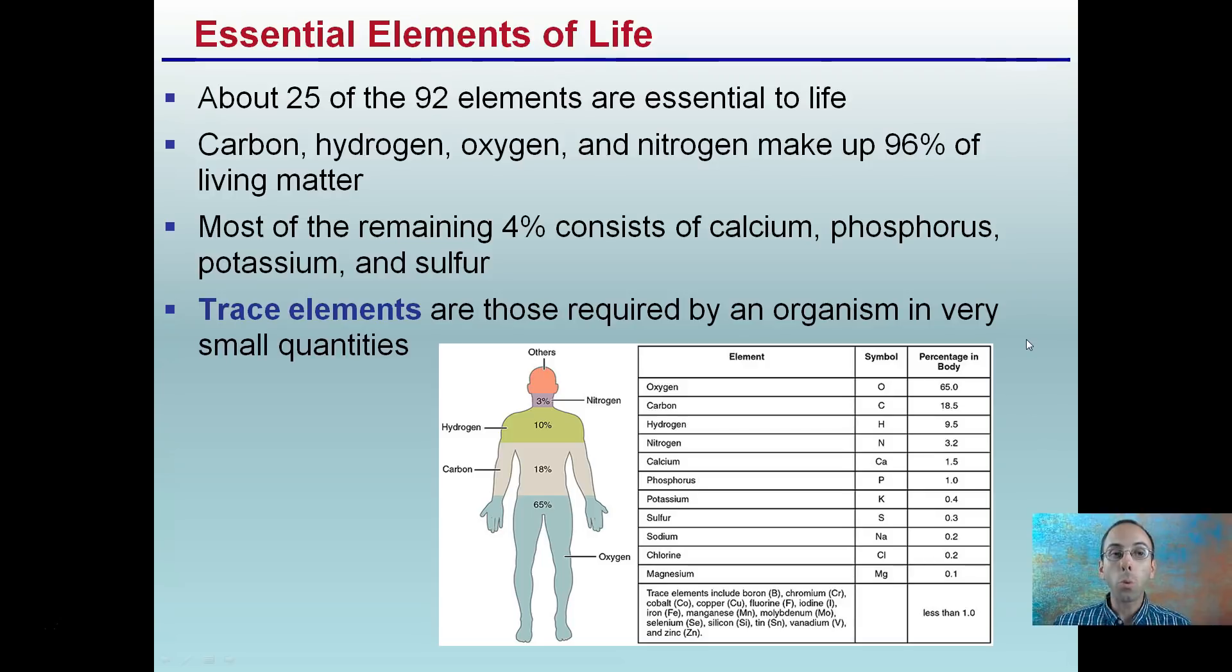Essential elements for life. About 25 of the 92 elements are essential for life. Carbon, hydrogen, oxygen, and nitrogen make up 96% of living matter. Most of the remaining 4% consists of calcium, phosphorus, potassium, and sulfur. What's left though is what we call trace elements. Those are required by an organism in very small quantities. We see here an example of some trace elements. So magnesium would be an example of an element needed in very small percentage. Trace is less than 1%, and magnesium can kind of fall into that category, but zinc, selenium, iron, iodine, chromium, boron, these are all trace elements. Essential for life, but still needed in very small amounts.